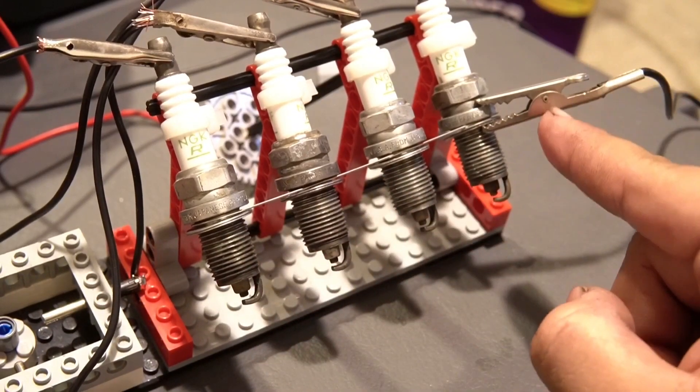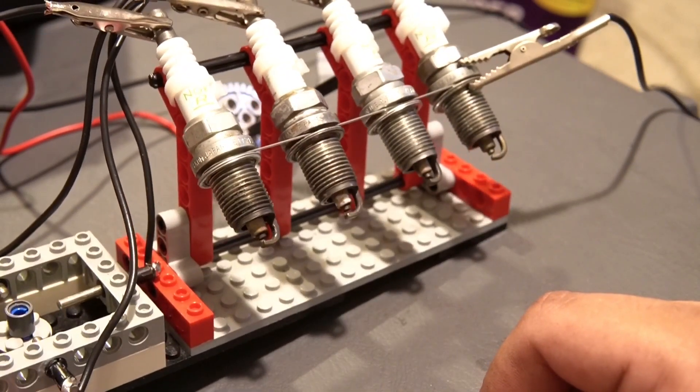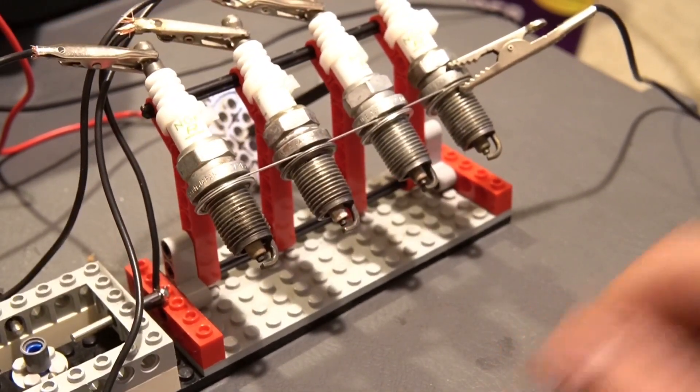And here we just have the common ground, which is just a piece of wire that bridges all four spark plugs together. That way we don't have to attach an individual wire for every single one of them.